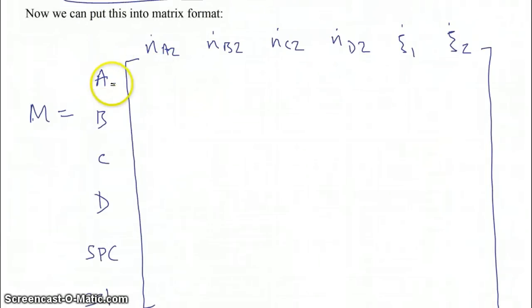When we put them into matrix format, it's going to look kind of like a table. So each row of this table will correspond to a different equation. So the first four rows will be the material balances for A through D. The fifth row will be the single-pass conversion equation, and the sixth row will be the equation for the selectivity. Now each column corresponds to the coefficient of a particular variable. So the first column will be the coefficients of N dot A2, the second for N dot B2, etc., finally ξ1 and ξ2.